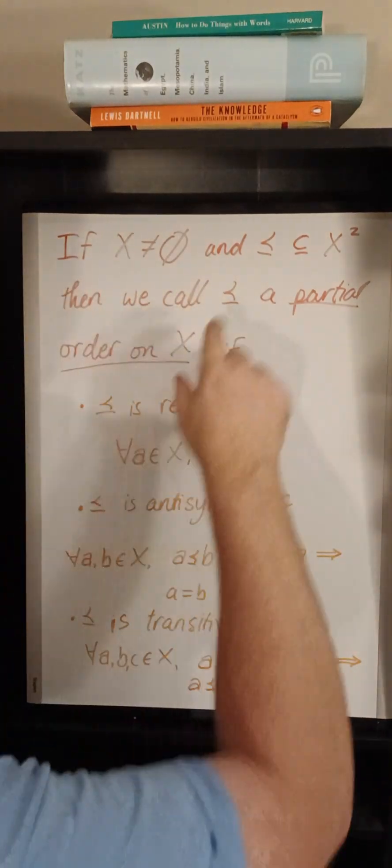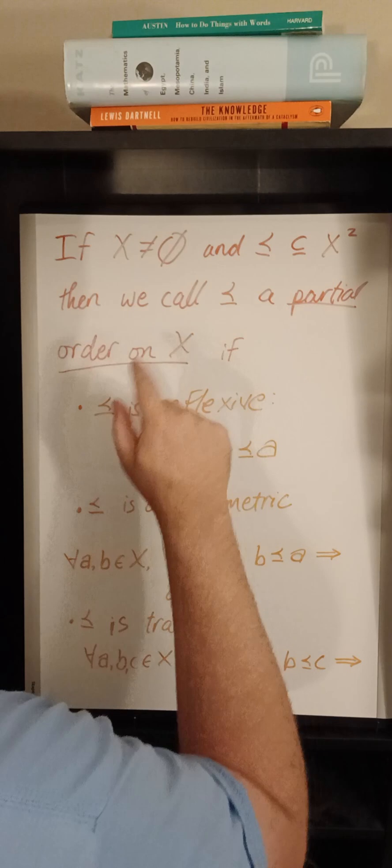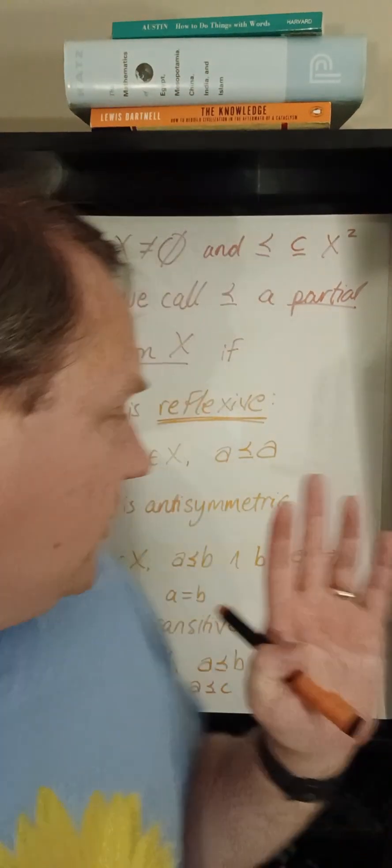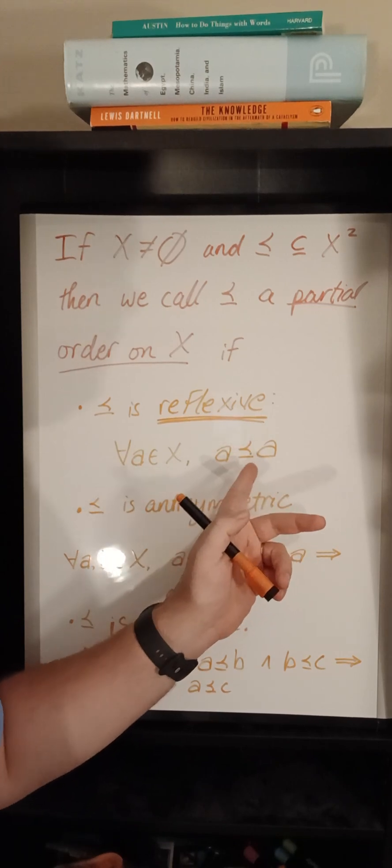So if we have a non-empty set X and a relation on that set, then we call it a partial order if the following three conditions hold. It must be reflexive, meaning that the relation holds between any element and itself always.